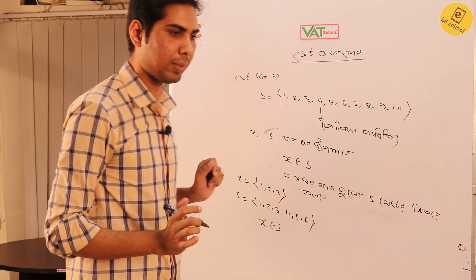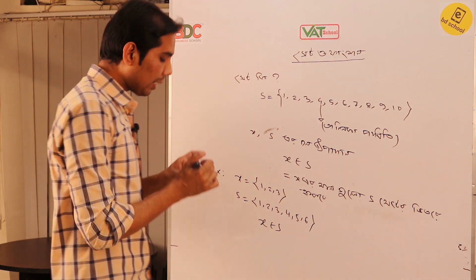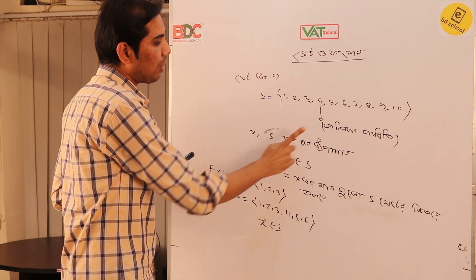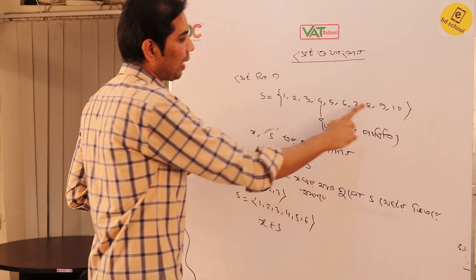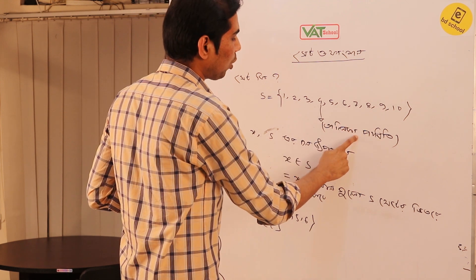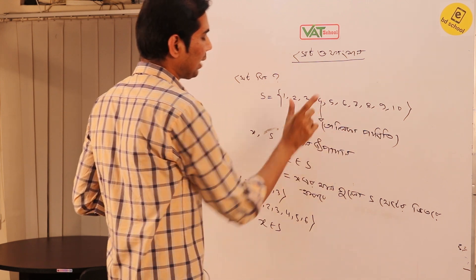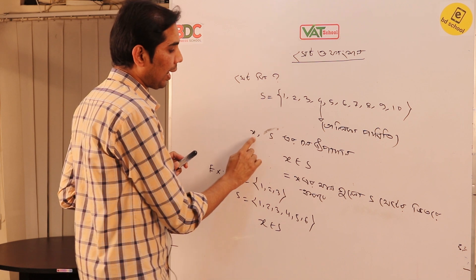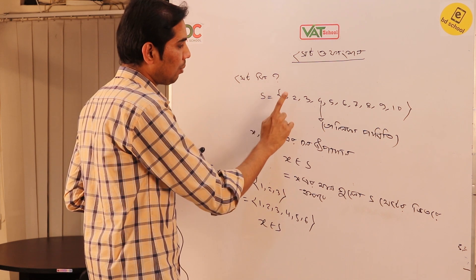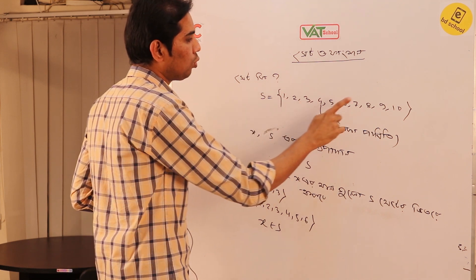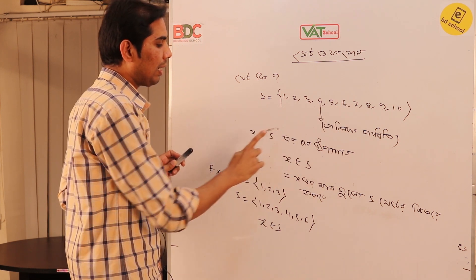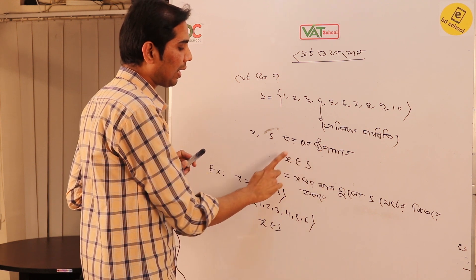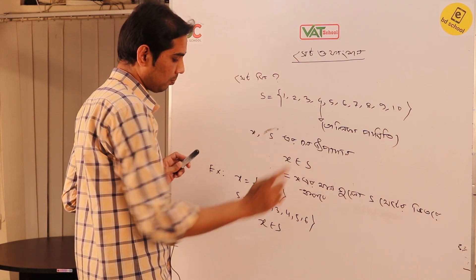A set becomes a set. We would call it a set. Every element of a set — at a set of a set — this is what we should call S.